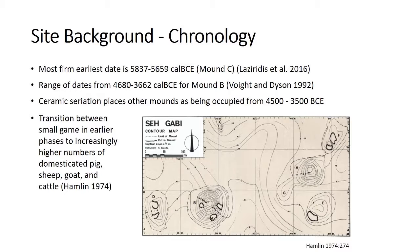This is important because the mounds were originally argued to be representative of different periods of occupation, mostly through the varied forms of architecture, material culture, and faunal assemblages. The earliest date for the site is in the small mound on the north side of this map and ranges between 5837 to 5659 BC. There are also radiocarbon dates for the large mound on the bottom, placing it between 4680 and 3662 BC. Ceramic seriation places all the other mounds broadly in the Chalcolithic between 4500 and 3500 BC.